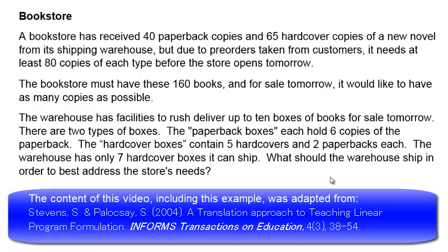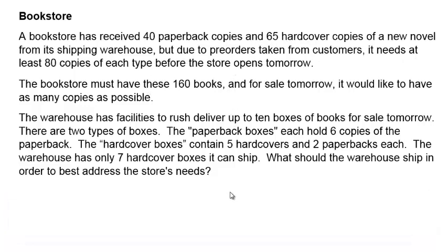It would be a good idea to pause the video and read the problem here. You can see that a bookstore has 40 paperback copies and 65 hardcover copies of a new novel. It needs to get more because of the pre-orders taken from customers, so it needs to have at least 80 copies of each type, paperback and hardcover. That means at least 160 books. But you would like to have as many copies as possible for sale tomorrow.